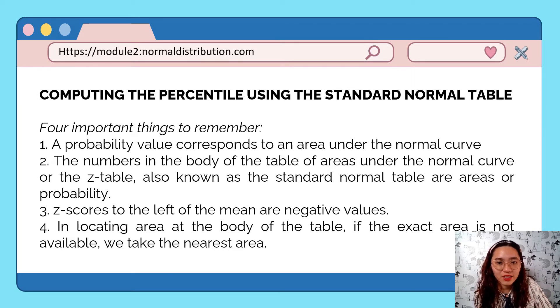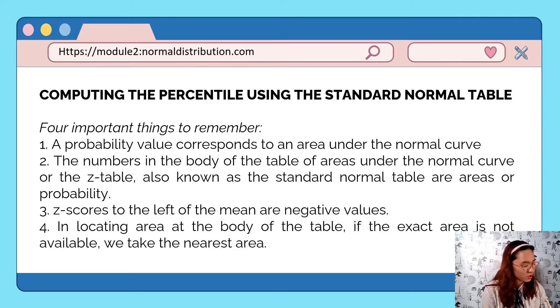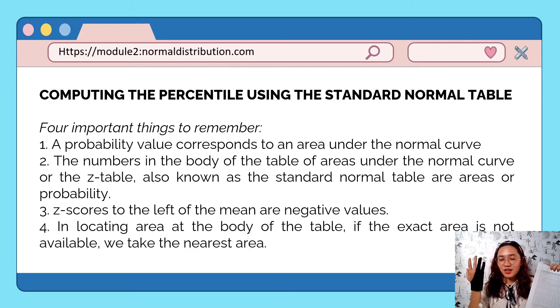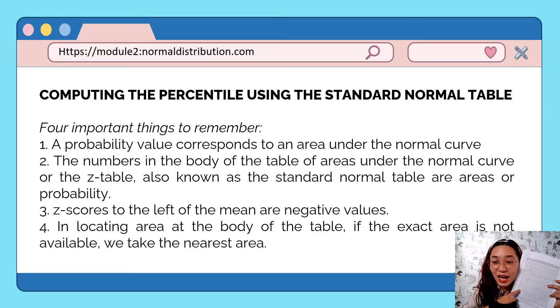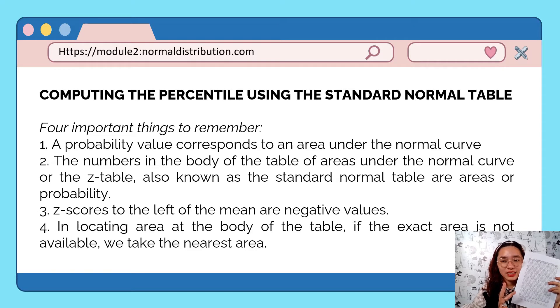In our lesson today, we'll find the raw score or the z-score that corresponds to a given percentile. In computing the percentile using our standard normal table or the z-table, we need to remember four important things. First, a probability value corresponds to an area under the normal curve. Second, the numbers in the body of the table of areas under the normal curve, also known as the z-table, are areas or probability. Third, z-scores to the left of the mean are negative values. And last, in locating area at the body of the table, if the exact area is not available, we take the nearest area.